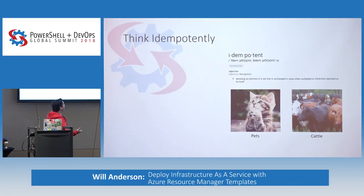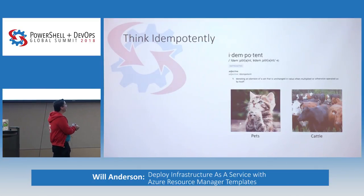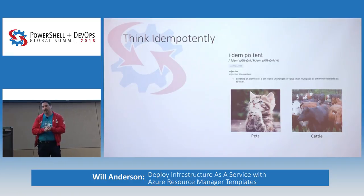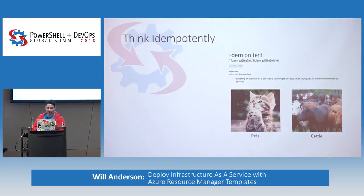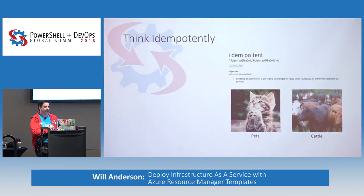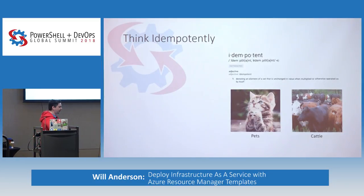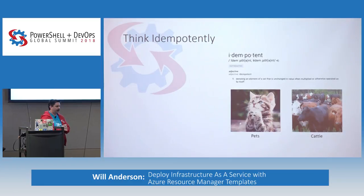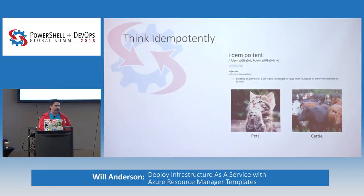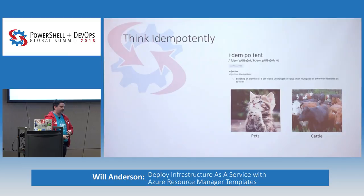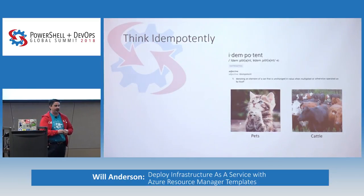One of the things you need to do when working on Azure templates is think idempotently — being able to go from that one-to-many model. This is very much the pets versus cattle mentality. When it comes to template design, you want to be able to create a template that not only makes it easy to rapidly deploy across multiple regions, but also to destroy that instance and rebuild it with greater ease than following a bunch of manual steps.